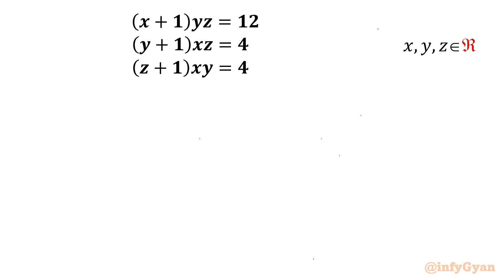Welcome back to Infigyan, my dear friends. In this video we are going to take up another challenging and interesting system of equations from BMO. The equations are: (x+1)·yz = 12, (y+1)·xz = 4, (z+1)·xy = 4. We have to find out all real solutions.